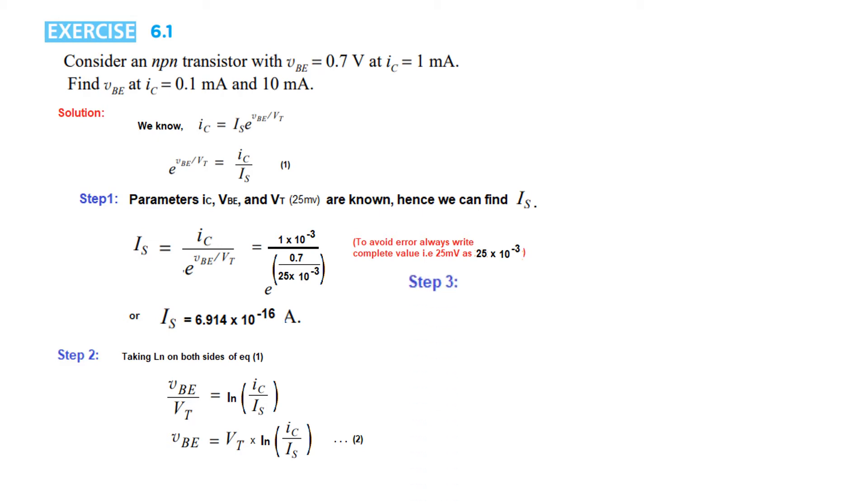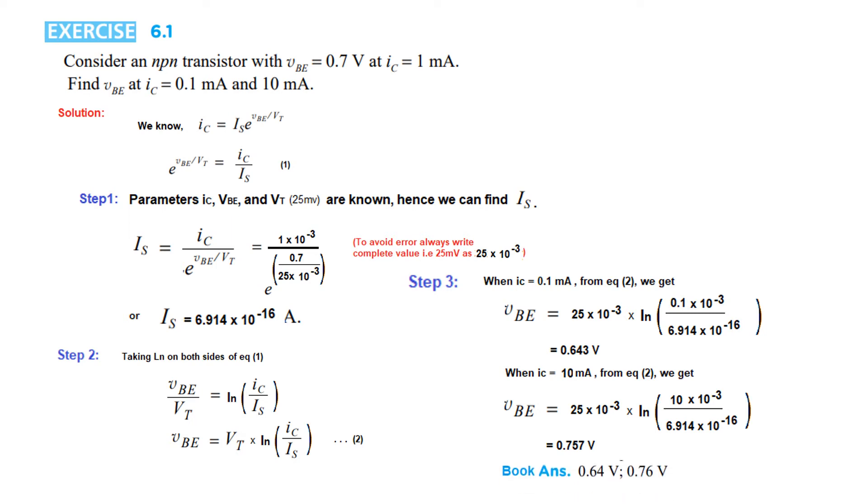In step 3, we put these two values of IC. For IC = 0.1 milliampere, we plug in all the values: VT = 25 × 10^-3, IC = 0.1 × 10^-3, and IS from our calculation. Solving, we get VBE = 0.643 V. For IC = 10 milliampere, using the same equation, the answer is 0.757 V. This is the answer given in the book, which is the same as we have.